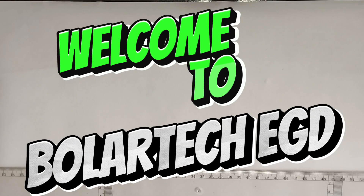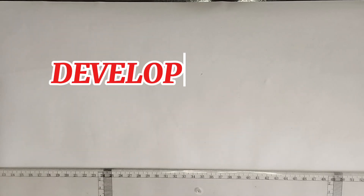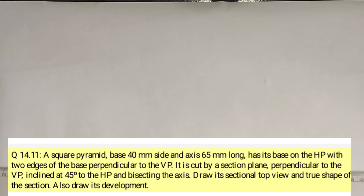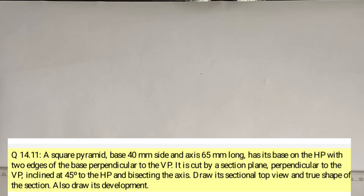Hello guys, welcome to my channel. In today's video we are going to be drawing the development of the frustum of a square pyramid. We have been given a question which says: a square pyramid of base 40mm side and axis 65mm long, resting on the HP (horizontal plane) with two edges of the base perpendicular to the VP.